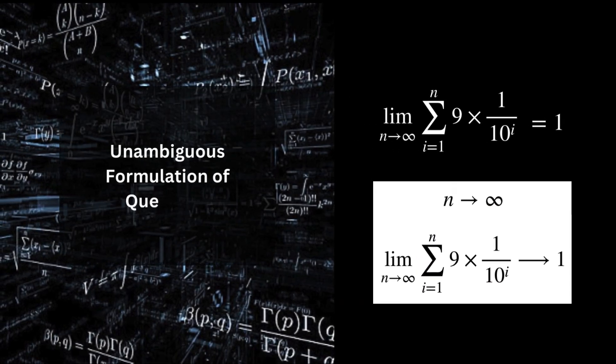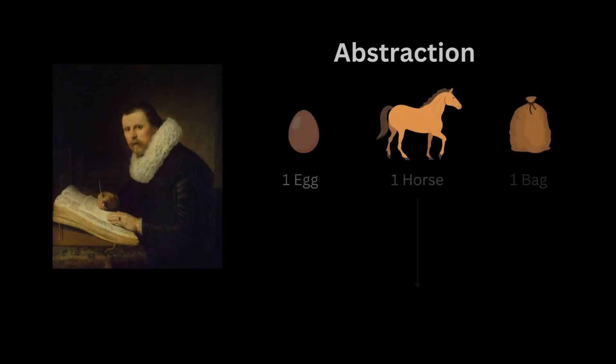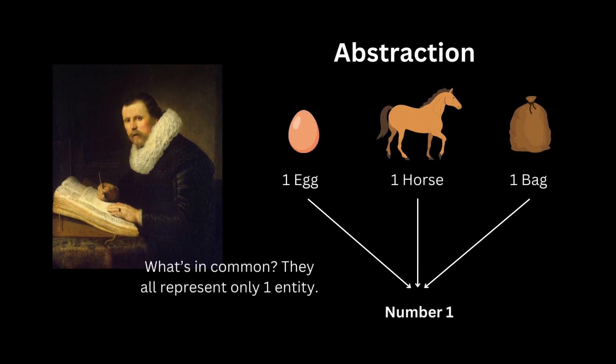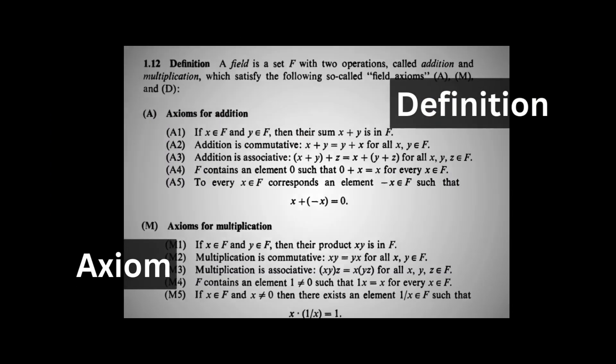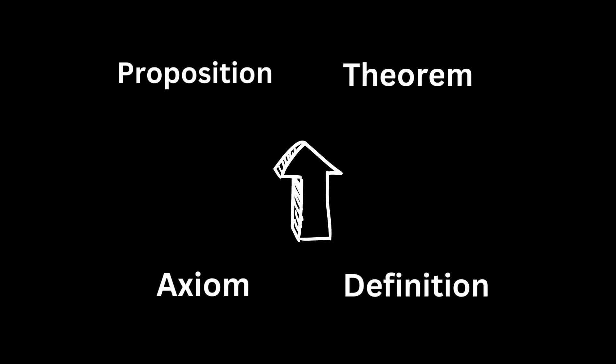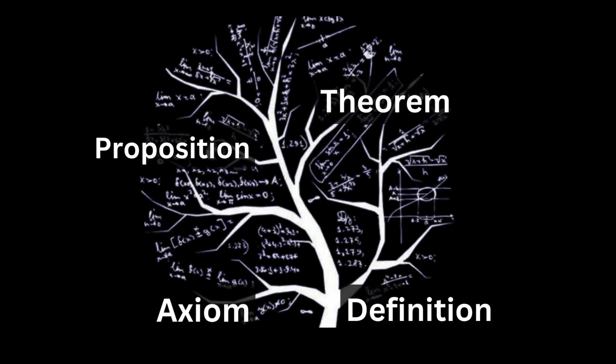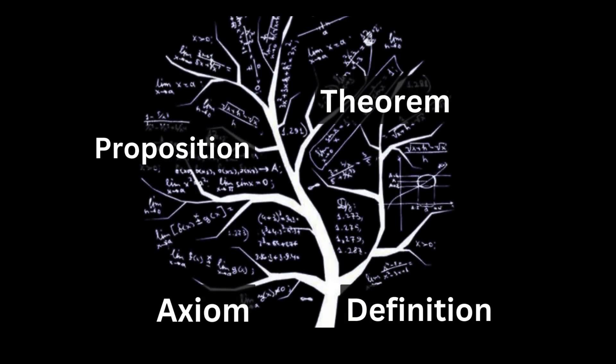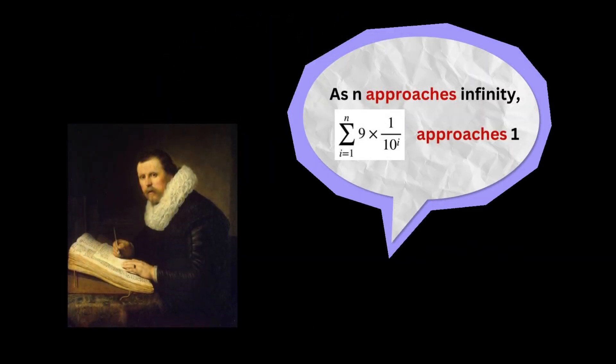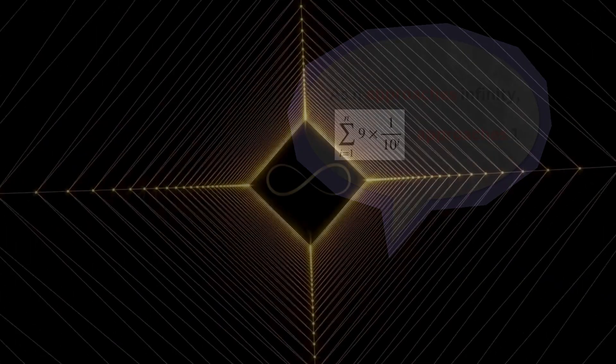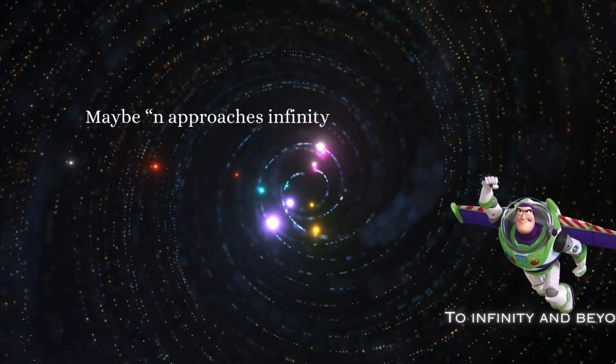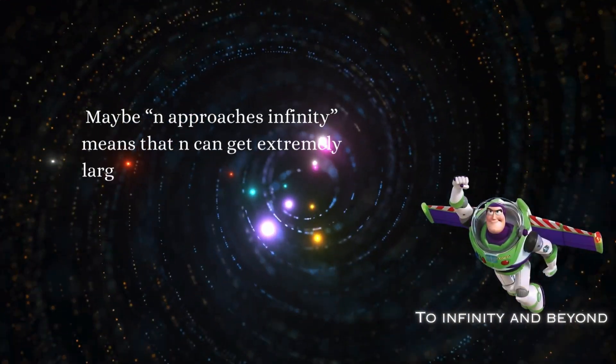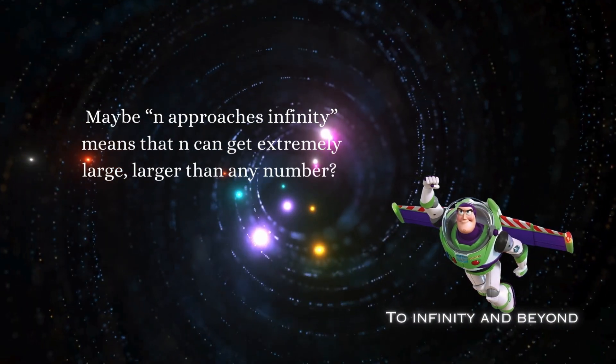Well, they start by formulating things unambiguously. Mathematicians work through abstraction, describing things using definitions or axioms, and proving theorems and propositions from them. Definitions or axioms serve as a foundation of mathematics. So they will first ask questions like what does approaches mean mathematically? How do we describe infinity? While you might intuitively understand what n approaches infinity means, expressing this precisely can be challenging.